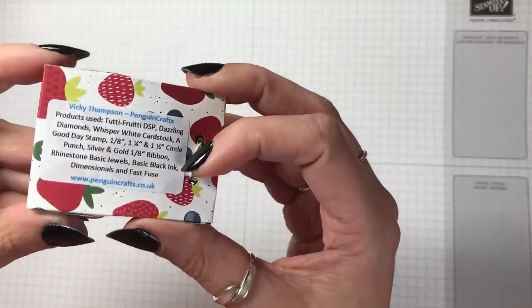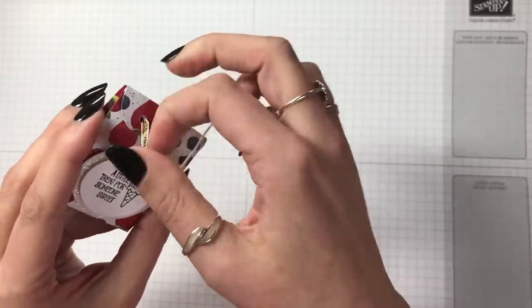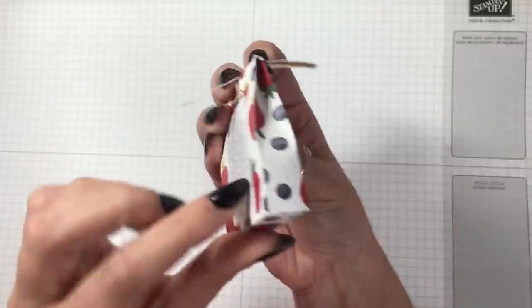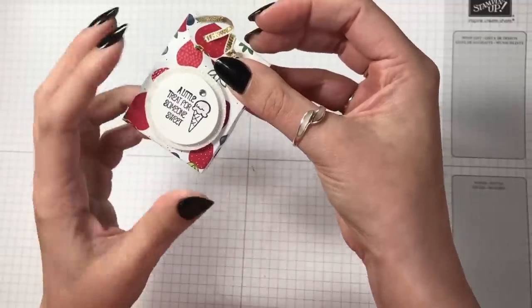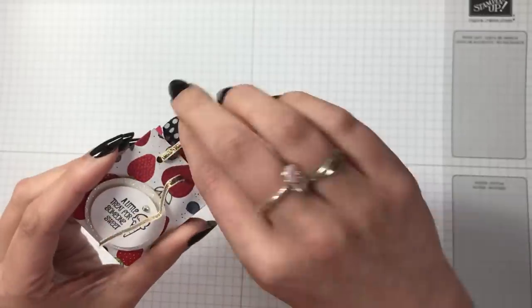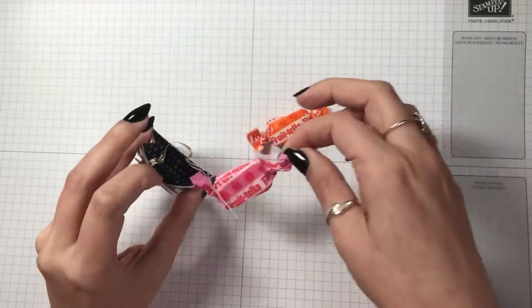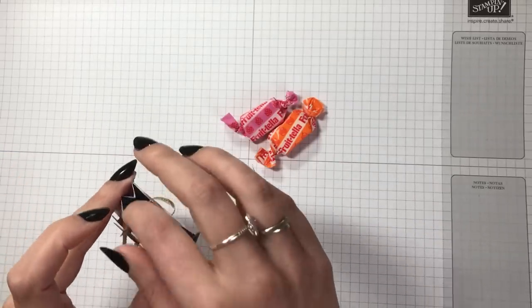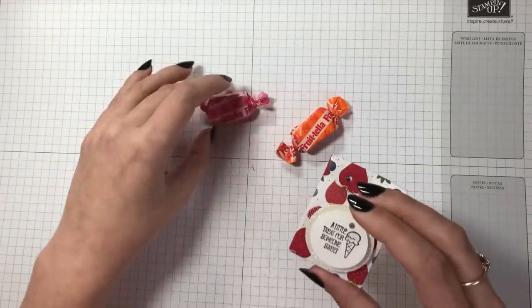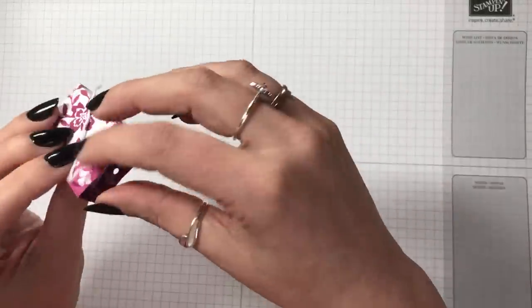This one was Vicky Thompson from Penguin Crafts, so she like me is a member of the design team on Stamping for All. I know Vicky quite well and I loved this because it was using my favorite pattern from that DSP. She's got that cute little stamp set with glimmer. I love a bit of glitter. She's giving me fruit tellers, I do like fruit tellers so I'll put those in my little sweet section.